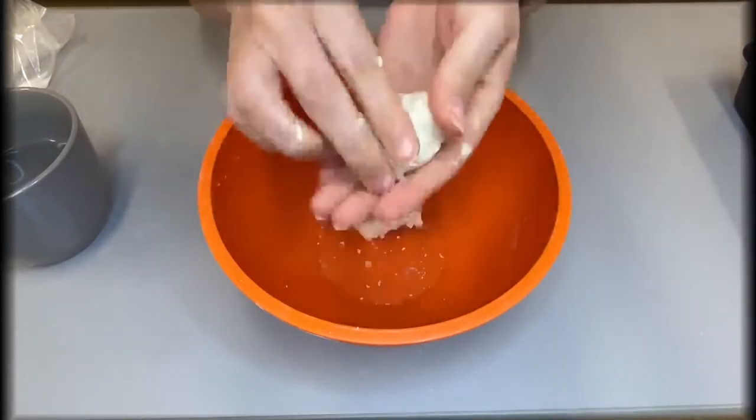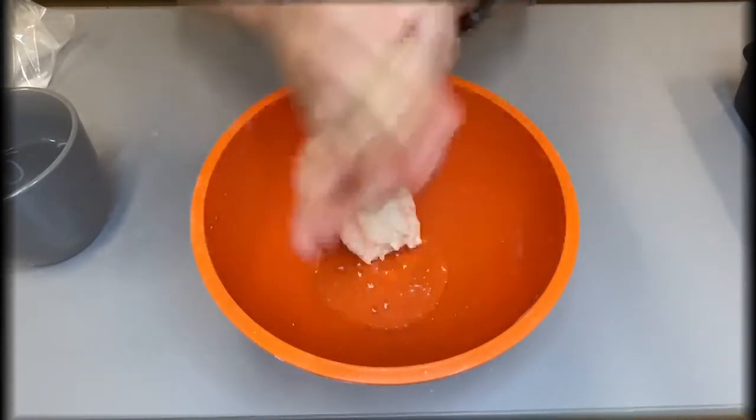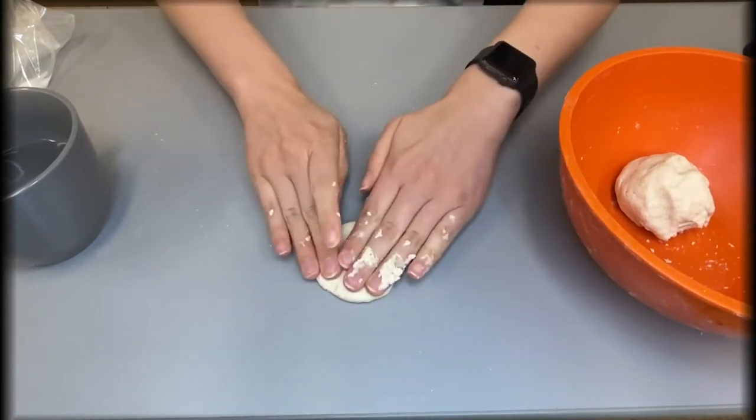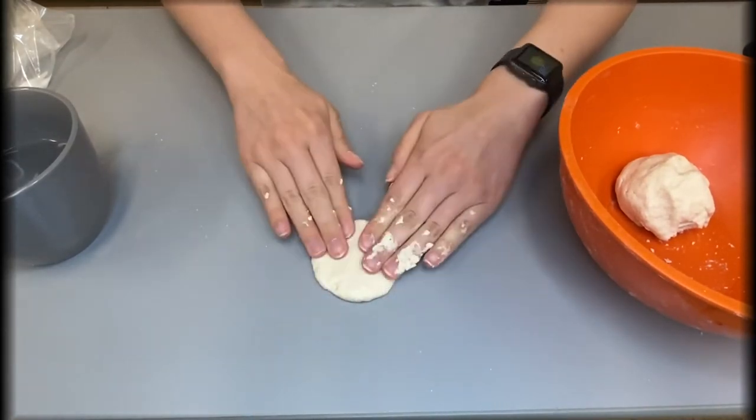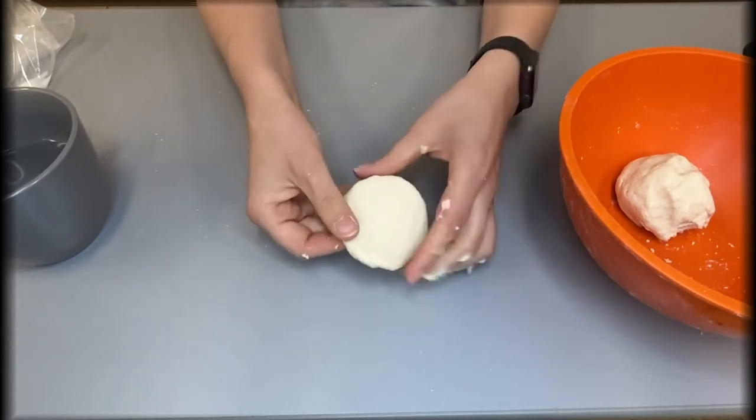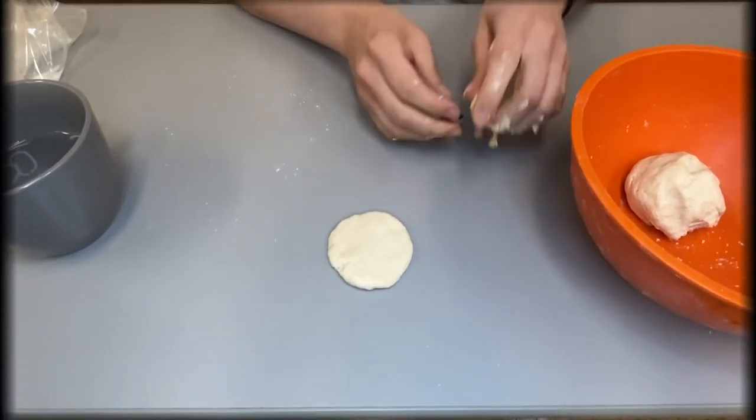Now go ahead and separate the dough into four sections about this size. Now take each piece and roll it up into a little ball. Once rolled up, go ahead and take the ball and use your hand and a flat surface to push the dough into a flat circle.